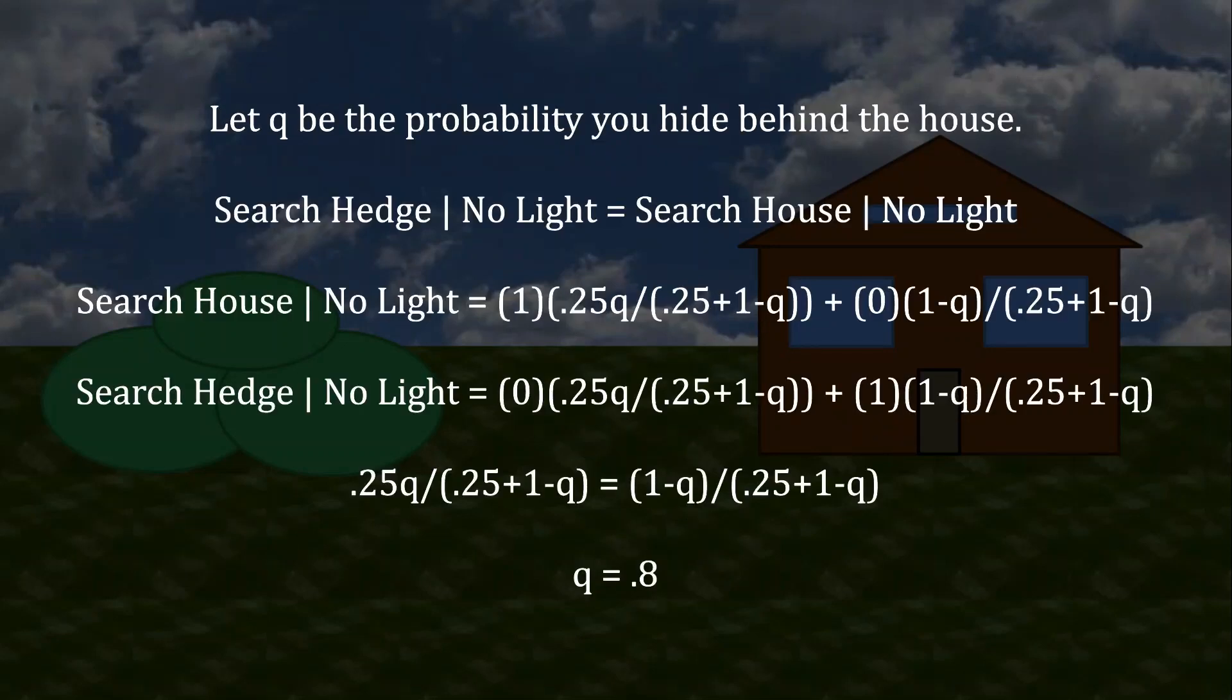Now all we have to do is go back and plug them into the equations from before, set them equal to one another, and solve for Q. And when we do that, we get Q equal to 0.8, meaning 80% of the time you're going to be hiding behind the house. Despite the fact that the security light will expose you now, you are more likely to hide behind the house than you were before.